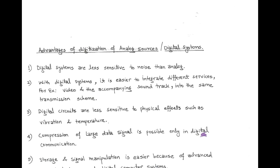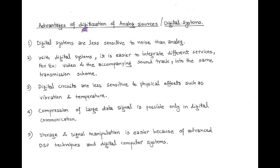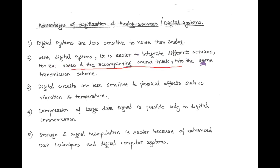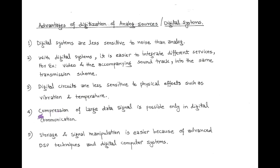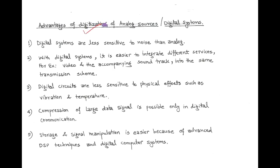Next, we discuss the advantages of using digital systems, or we can say the digitization of analog sources. First, as compared to analog systems, digital systems are less sensitive to noise. For example, video and soundtrack can be combined into the same transmission scheme. Third, digital circuits or systems are less sensitive to physical effects such as vibration and temperature. Fourth, compression of large data signals is possible only in digital communication. And lastly, because of advanced digital signal processing techniques, storage and manipulation of digital signals become easier.